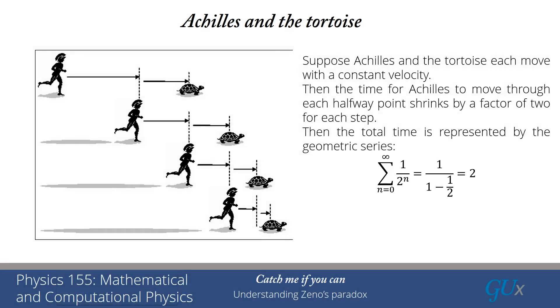Now if you think about this for a moment, this is exactly what it should be. If in the first time interval he goes half the distance, the time interval it's going to take for him to go the other half of the distance is exactly the same as the first time interval because they're all moving at constant speed. And so the total time should be twice the time it takes to go that first half distance. And that's indeed what the geometric series tells you.